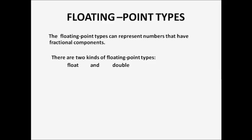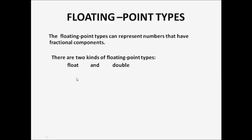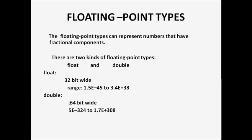There are two kinds of floating point types in C#: one is float, another one is double. Float type is 32-bit wide, and its range is 1.5E-45 to 3.4E+38. Double type is 64-bit wide, and its range is 5E-324 to 1.7E+308.